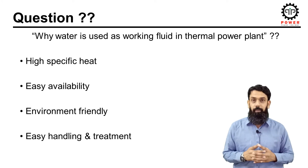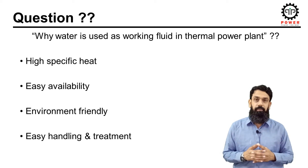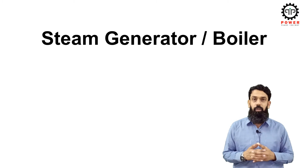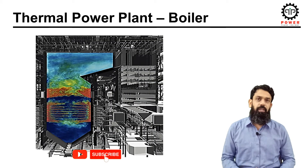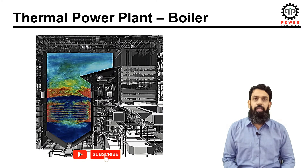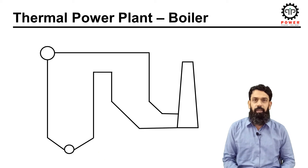Let's start our discussion regarding the components of thermal power plants. The function of the boiler or steam generator is to convert water into steam of the required parameters of temperature and pressure through combustion of fuel. Let's understand the operation and configuration of the boiler through a diagram.